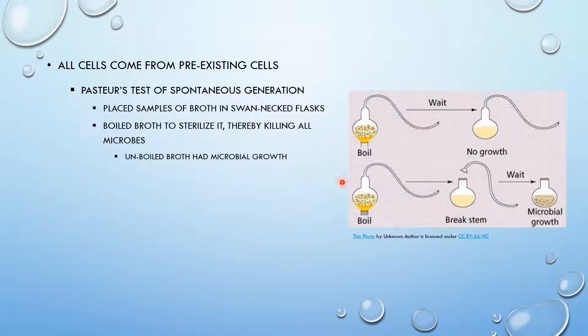So what he did is he boiled a broth, which killed all microbes in it. He had a control group, obviously, unboiled broth, and in unboiled broth microbes are not killed, and therefore microbial growth occurred. In the boiled broth, in one group, he left the swan necks on. In the other group, however, he broke the stem. Now air could still get in the unbroken flasks. What couldn't get in was the microbes. In this, air could also get in, obviously, but microbes could also get in as well, unlike this group.